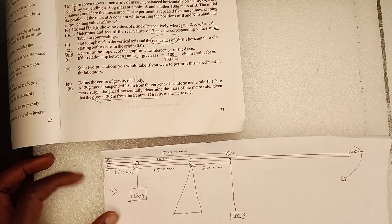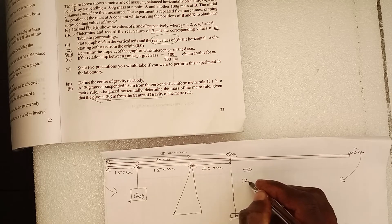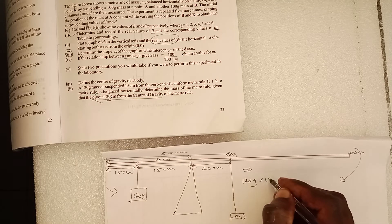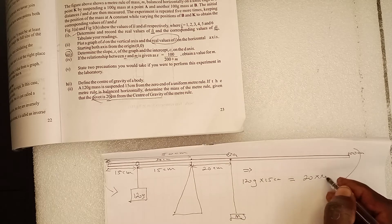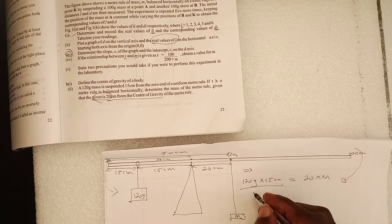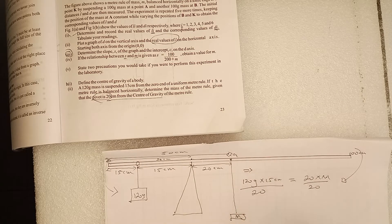Clockwise moment. So this implies that 120 grams times 15 cm equals 20 cm times the mass of the ruler. Divide this by 20, we're gonna have...